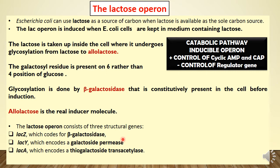One important thing to know: a very low level of expression of the lac operon must always be present in the cell. It's not that the lac operon is always completely switched off. A very low expression is important — specifically, minimum activity of permease must always be present in the cell at all times, because otherwise lactose cannot enter the cell.